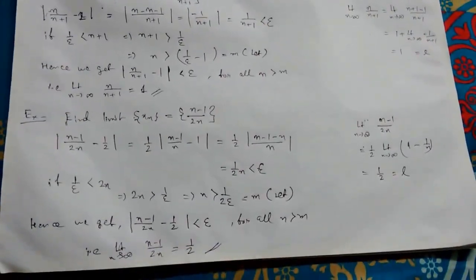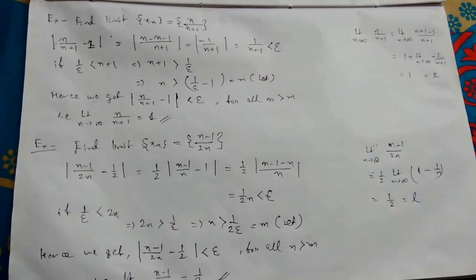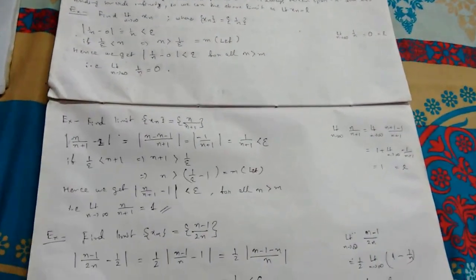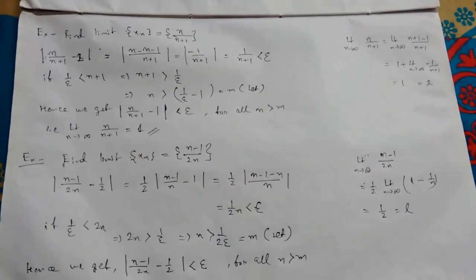Therefore, the limit as n tends to infinity of (n−1)/(2n) equals 1/2. This is our answer. If you had any problems, comment below. If you liked my video, hit the thumbs up button and subscribe to my channel for more videos. Thank you.